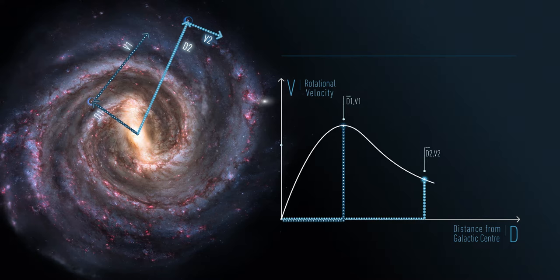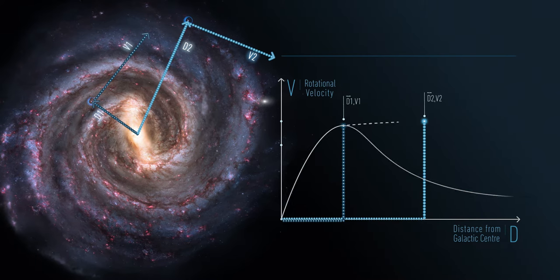However, from rotation velocity astronomical measurements, we see a different behavior. The outer stars rotate around the galactic center as fast, if not faster, than the inner ones.